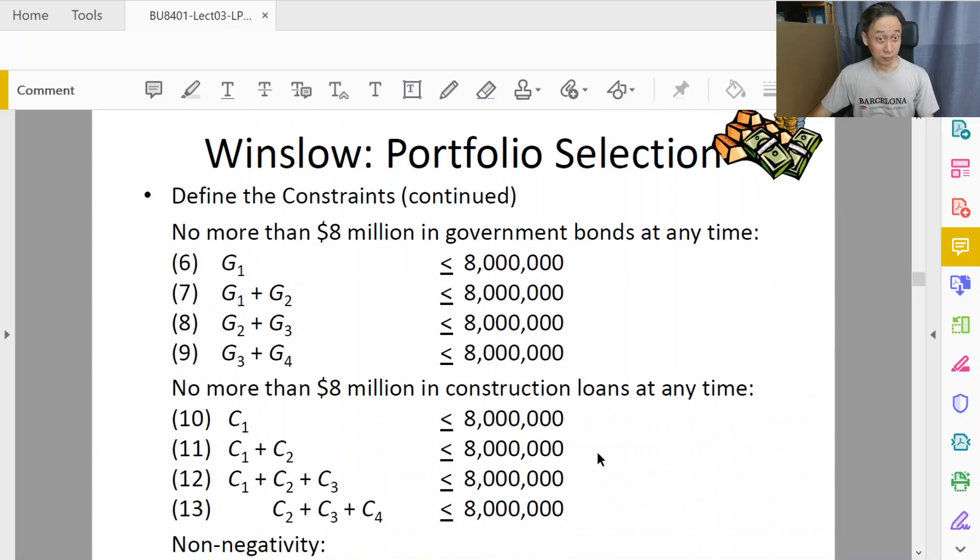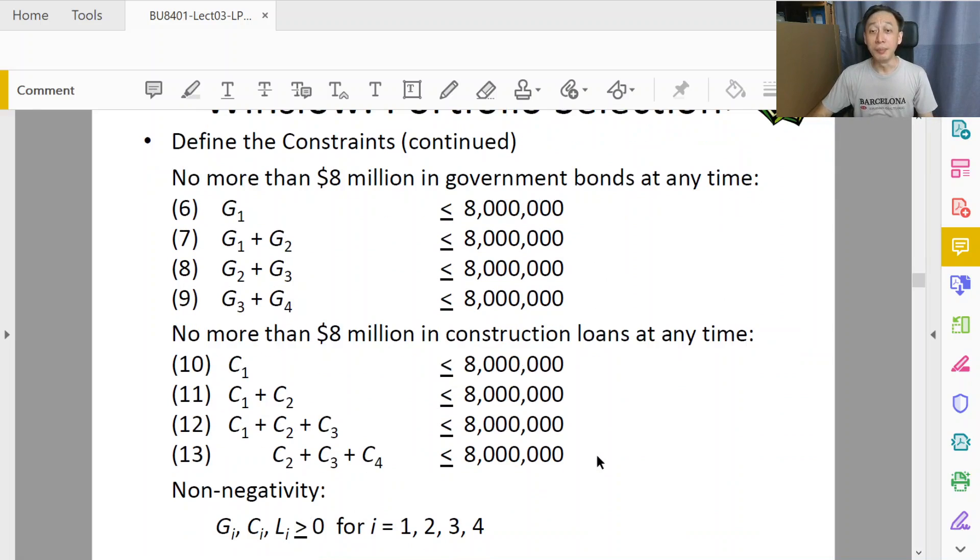The last part about limiting the exposure of up to 8 million at all times in construction bonds, construction loans, and government bonds: the G's will have to be at any time that we have investment in G's less than or equal to 8 million. Now we cannot add G1, G2, G3, G4 all the time. G1 just refers to the first month. If that's zero, that's fine, but if it is non-zero, it better be less than or equal to 8 million. In the second month, the exposure, the amount of investment into government bonds, will be G1 and G2.